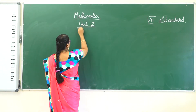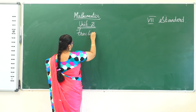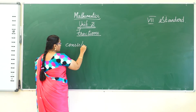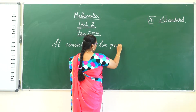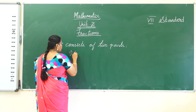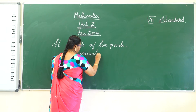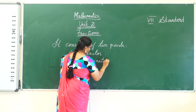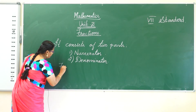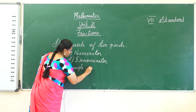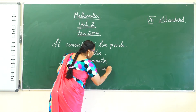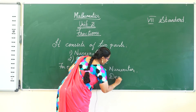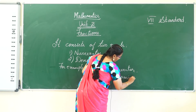A fraction consists of two parts: the first one is the numerator, and the second one is the denominator. For example, 3 by 4 — the 3 is called the numerator and 4 is called the denominator.